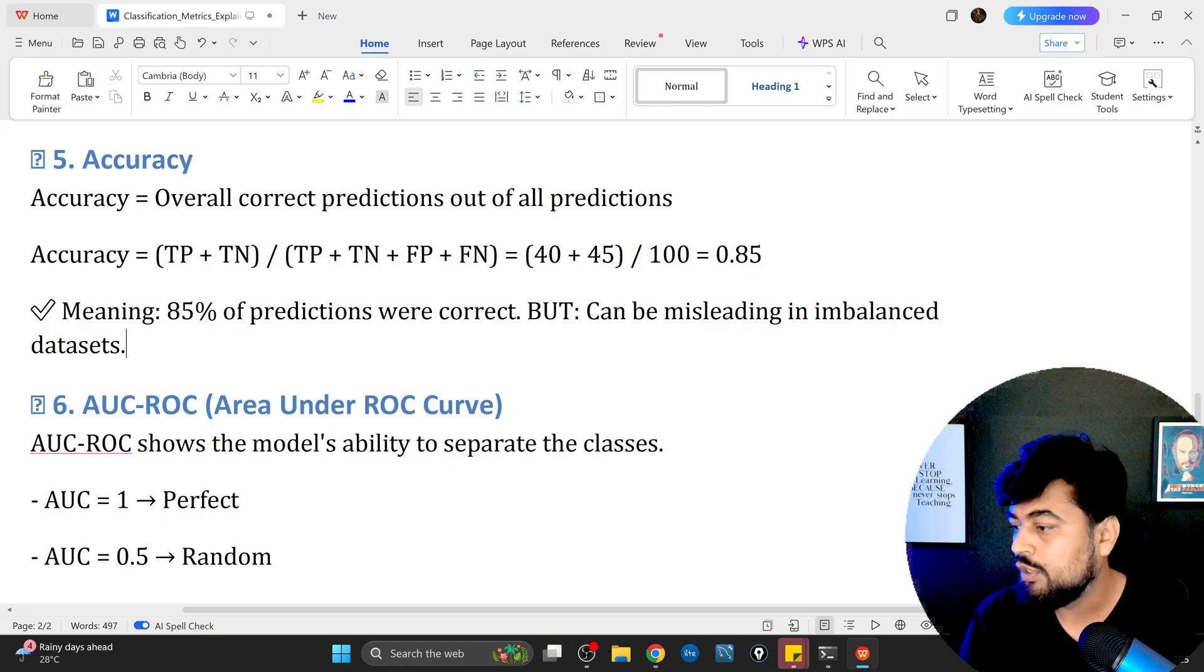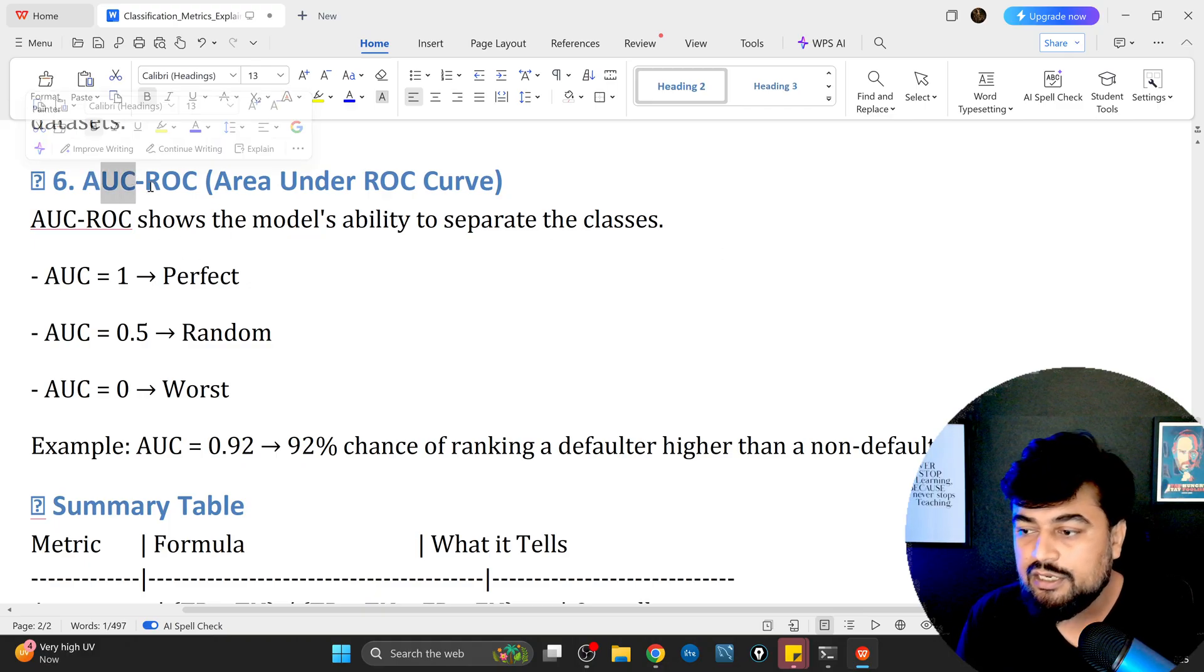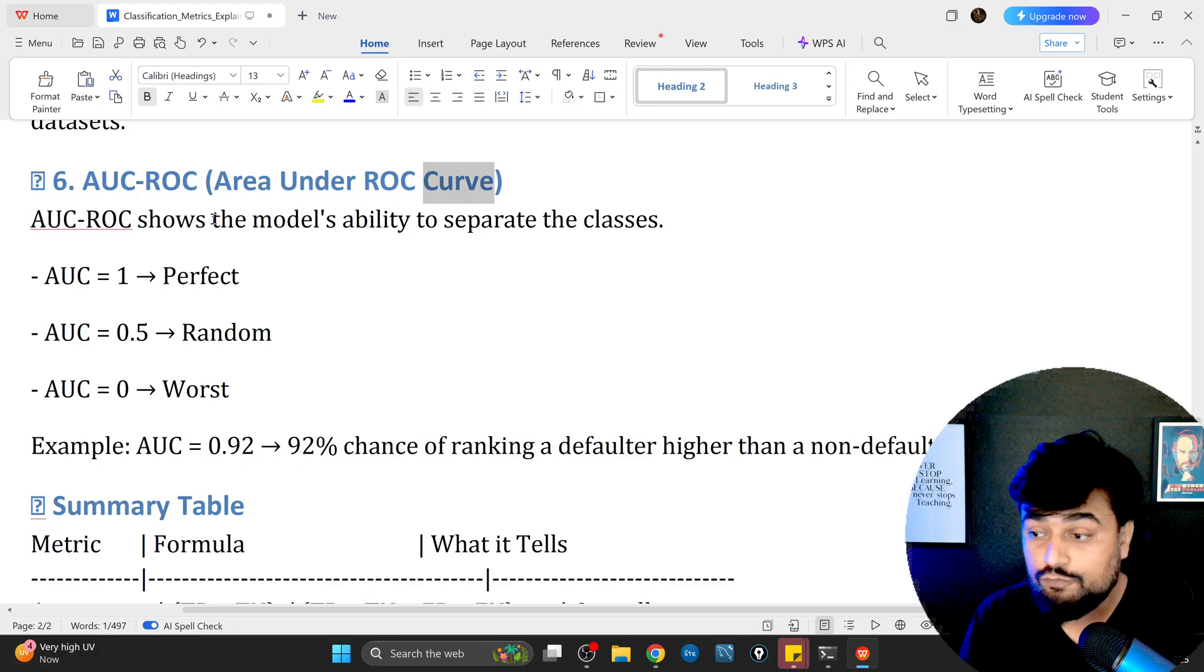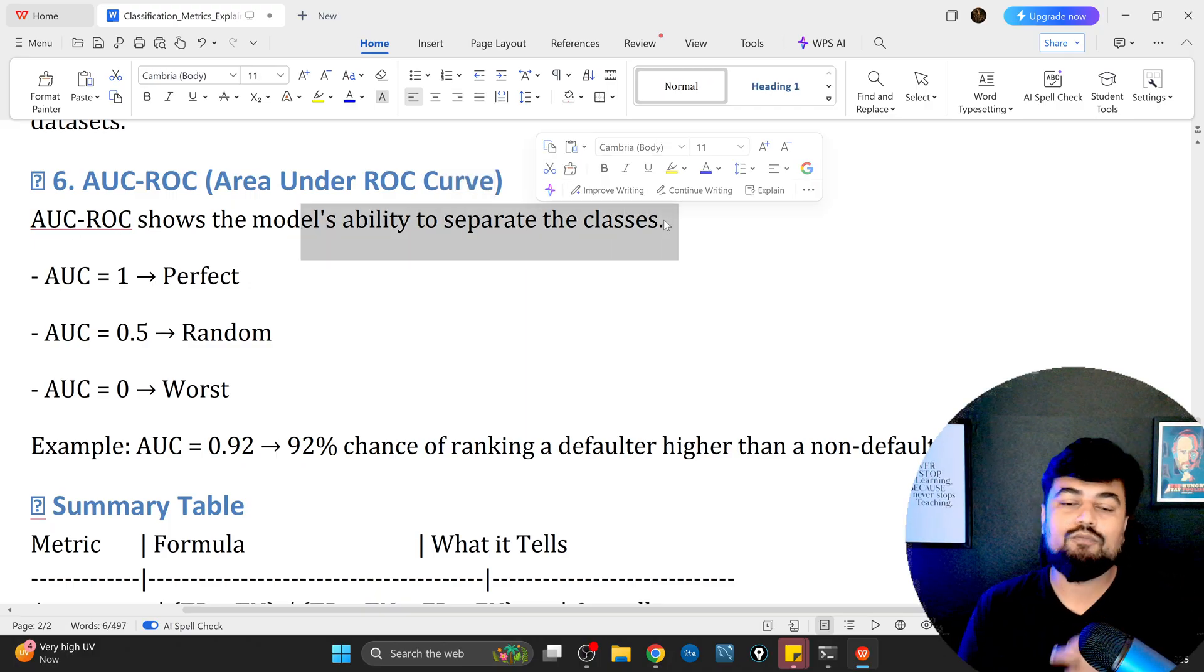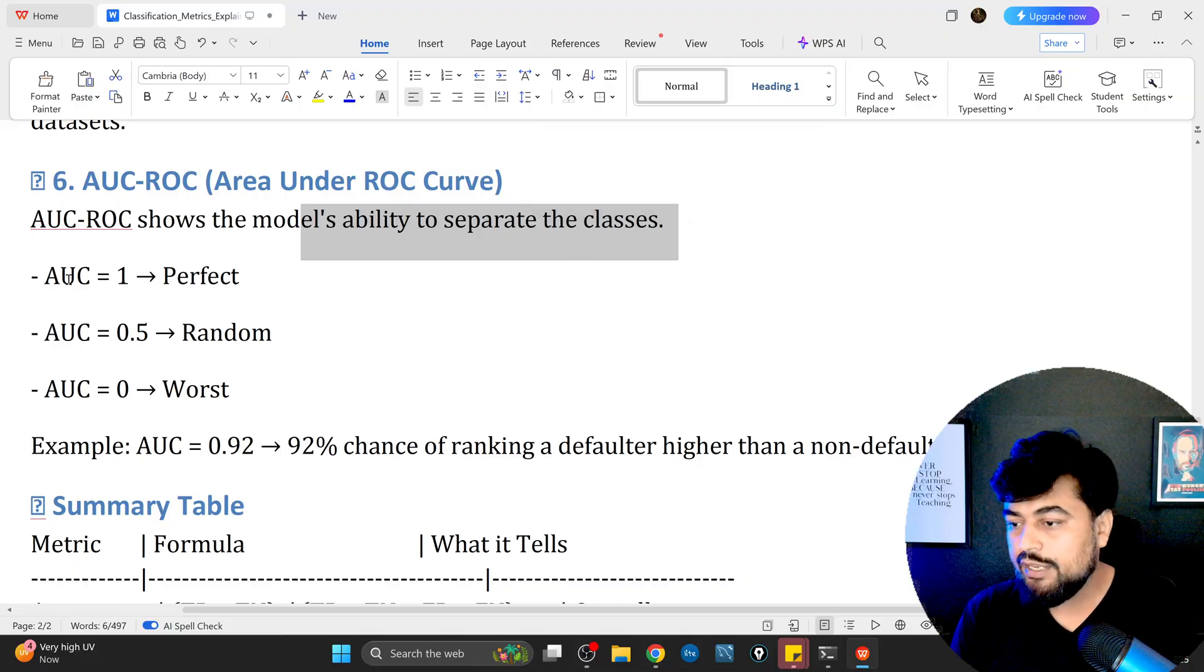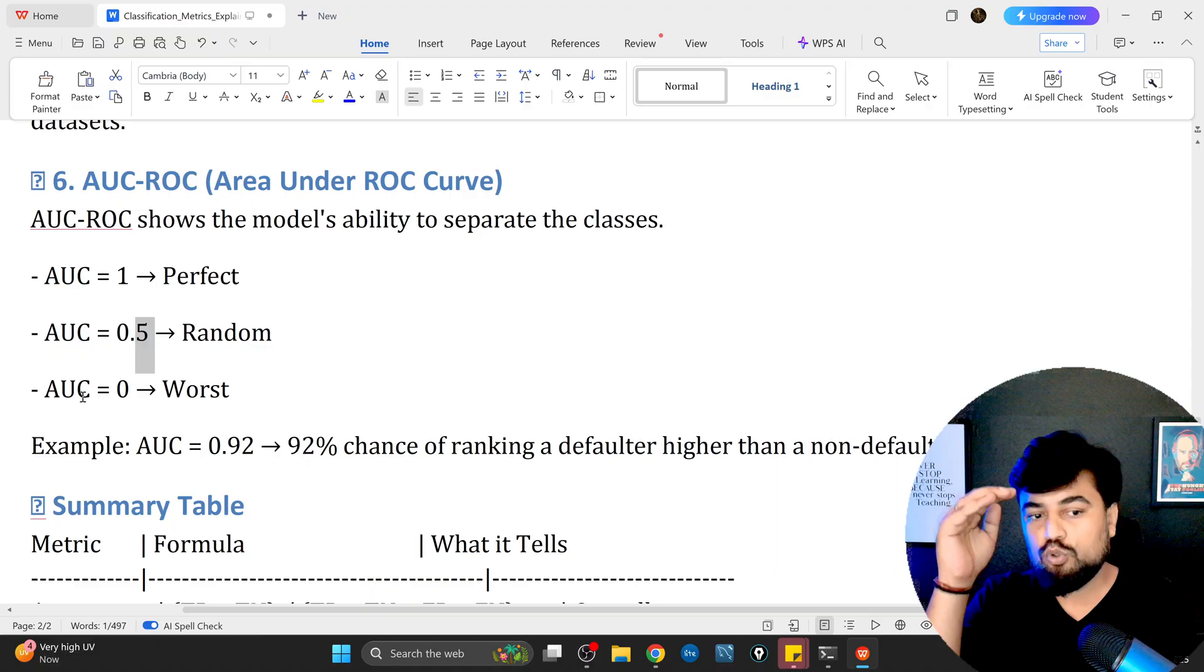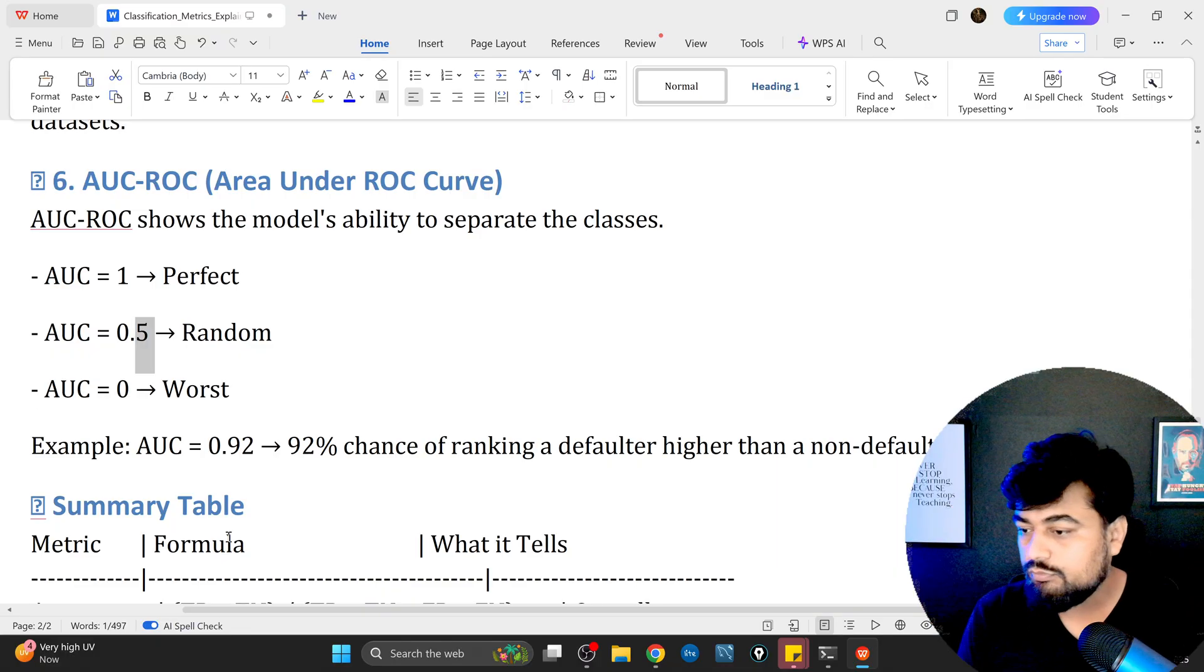The important aspect is AUC, area under curve, ROC curve. AUC ROC shows the model's ability to separate the classes. What is the ability of the model to segregate default and non-default? AUC of 1 means perfect, AUC of 0.5 means random, and if it goes below 0.5 that is not a good AUC.